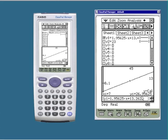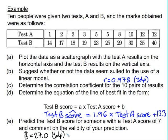And if we comment on the validity of our prediction, we had very strong positive linear correlation, and we were interpolating a score, and so we can be very confident about the validity of our prediction.